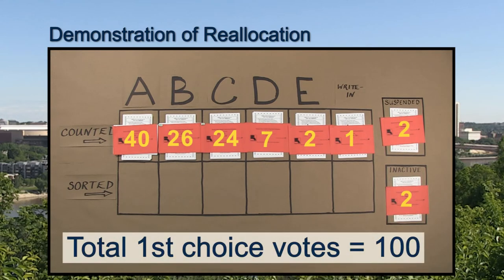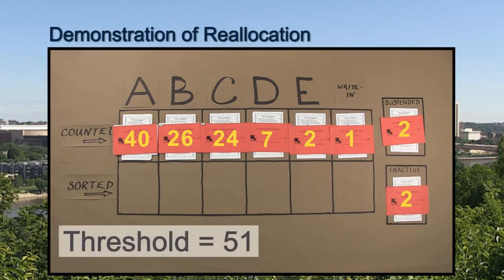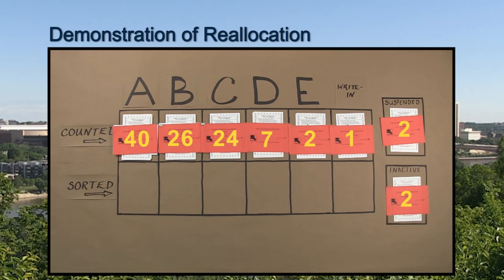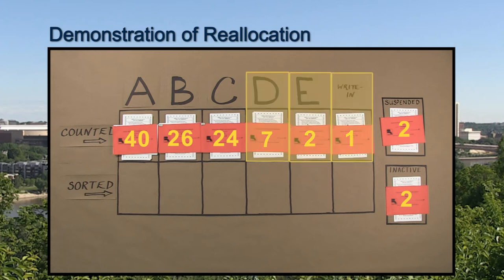If no candidate has reached the threshold to win the election, it will be determined if it is mathematically impossible for any of the candidates to be elected. Because it is mathematically impossible for Candidate D, E, and write-in to win the election, their first-choice votes are eliminated.